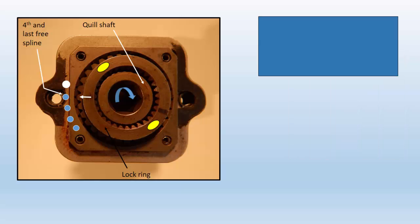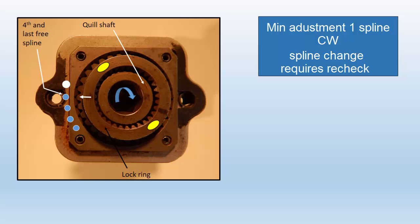I noticed on the unit I tested that one spline clockwise will increase the load arm torque about 10 inch pounds. To make the minimum 10 inch pound increasing adjustment you will need to apply an extra 10 to 20 inch pounds above the existing load arm torque to free up the lock ring and to reinstall the lock ring one spline clockwise. After the above adjustment repeat the quill torque recheck using the technique described on the previous slide.